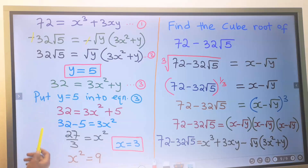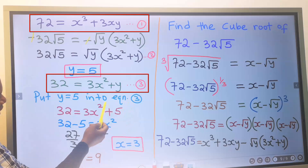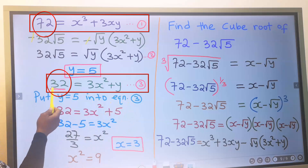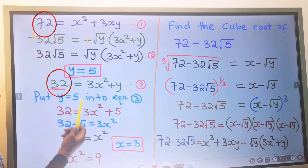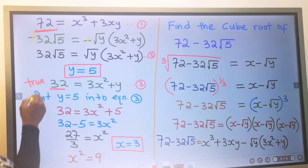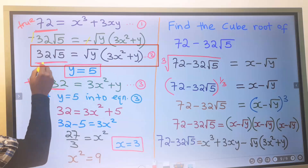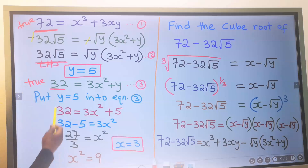Next, we are going to check for the accuracy of this result by substituting x equal to 3 and y equal to 5 into equation 3 to see if we get 32. Likewise, we will substitute these values into equation 1 to see if we get 72. If both are true, then x and y will be our answer. But if not, we will modify equation 2 and make another assumption and check again.